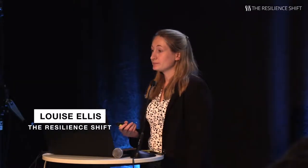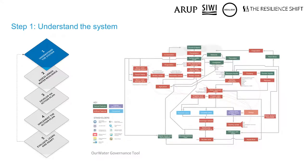The first step is about understanding the system — establishing who's going to be the city champion and who's going to convene all of the partners together. This means understanding the water system and its context, both the physical and spatial location of the water system, but also its interconnectedness with other systems. Then understanding the governance of that water system: who are the stakeholders who need to be around the table and part of the city water resilience approach.